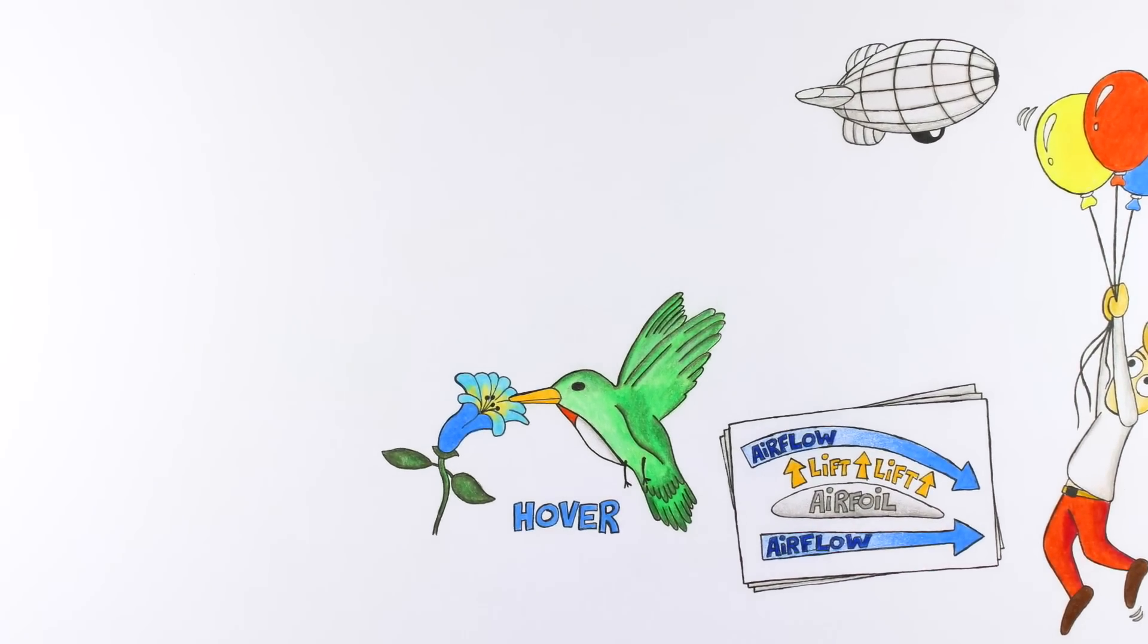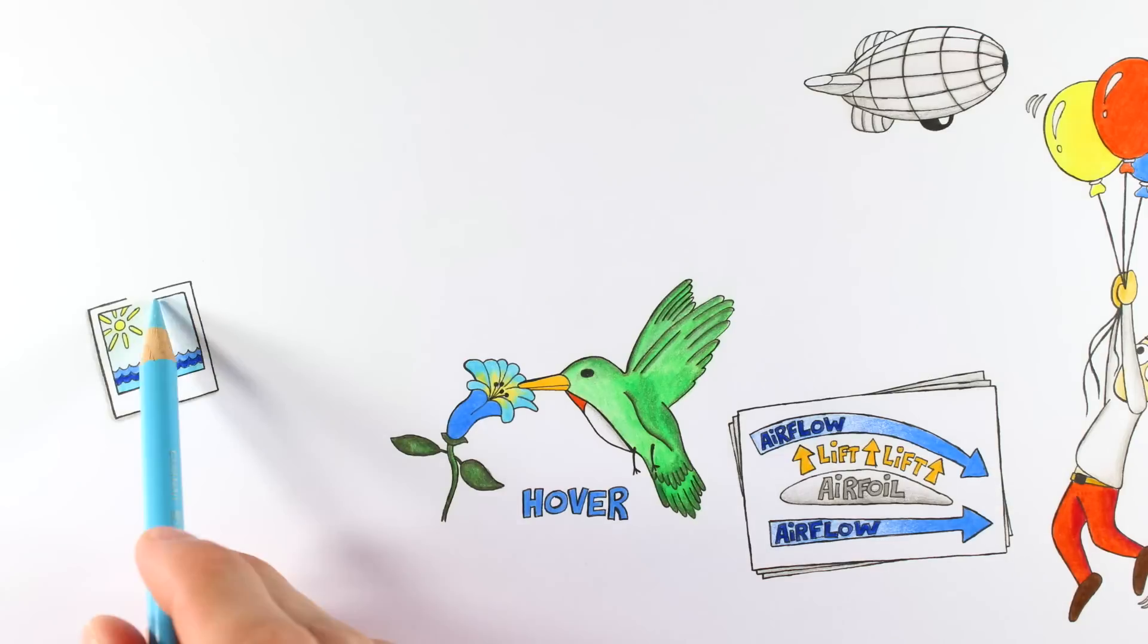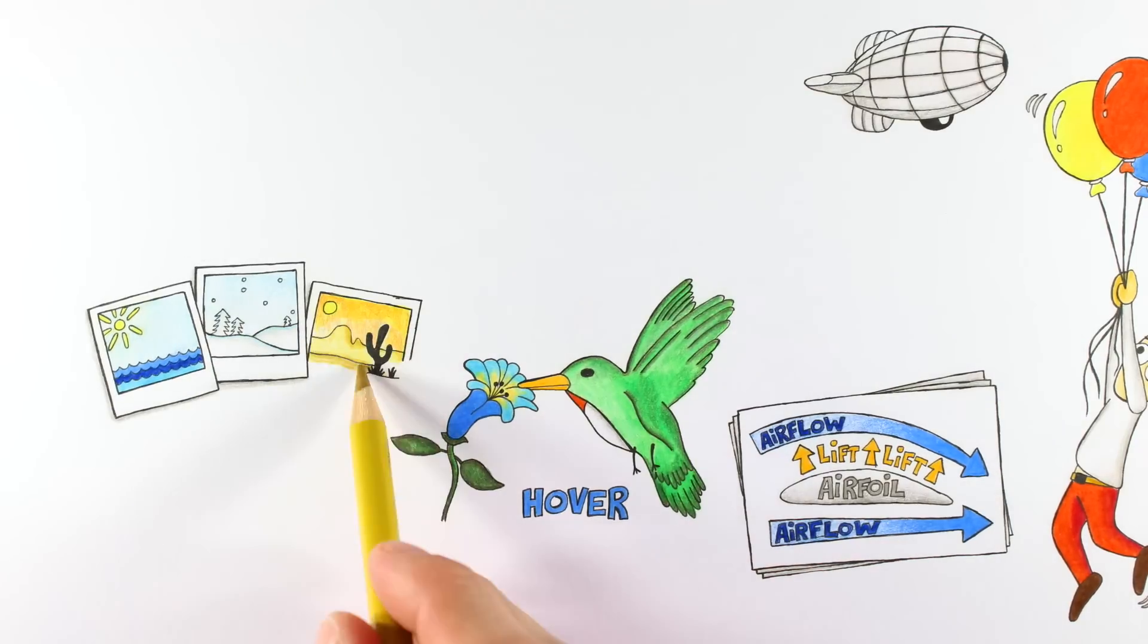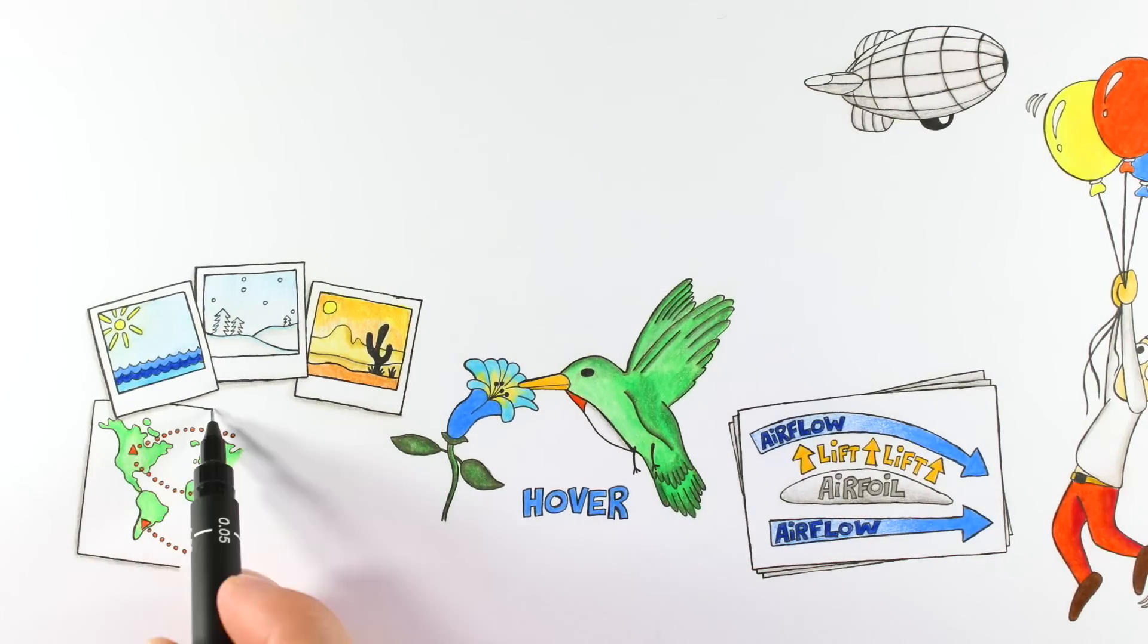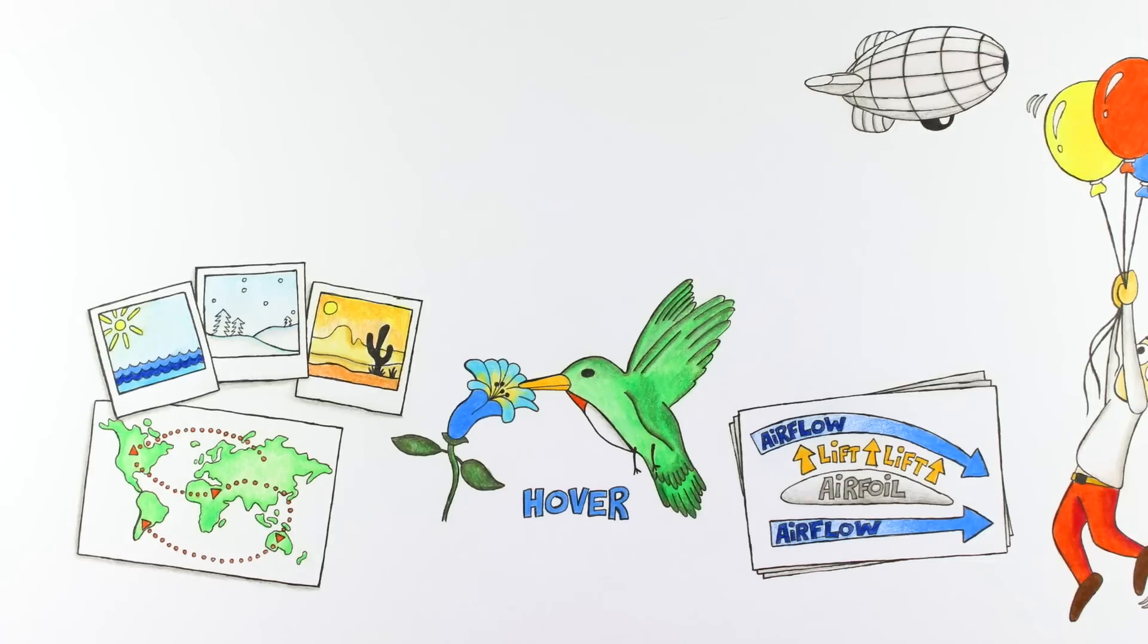Thus we get an aircraft that can land anywhere including on water, ice or desert and move things around the world from anywhere to anywhere no matter how far.